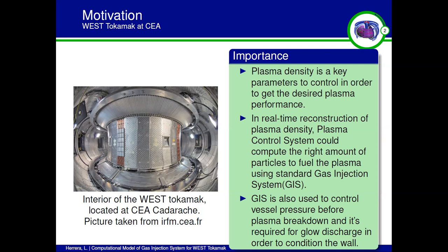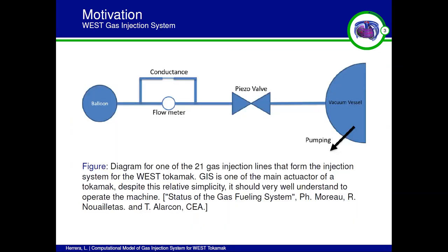As you can see here, we have an image of the WEST tokamak interior — before it was called Tore Supra. This is the main injection system. We have the balloon which contains the gas we want to put inside the machine. We have a flow meter to measure the flow of the different species injected into the vacuum vessel. Then we have the piezo valve which is in charge of allowing the gas to enter the vacuum vessel. The data coming from the vacuum vessel is sent to the piezoelectric to control the amount of gas injected.